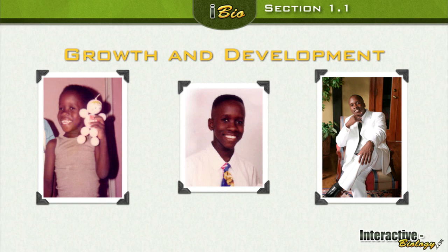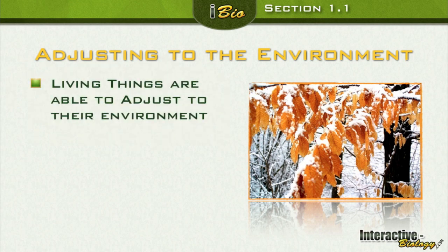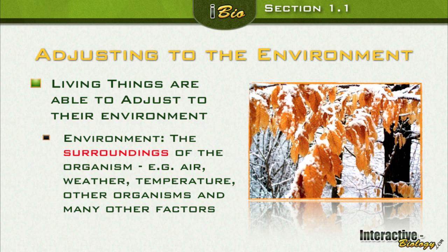And this is me at the age of 25 — I look like P. Diddy. So there I was at five, twelve, and twenty-five. Obviously there was growth and there was development. So far I think I am an organism. The next characteristic is adjusting to the environment. Living things are able to adjust to their environment.